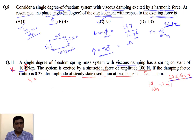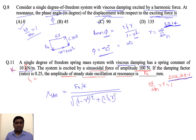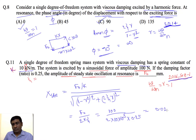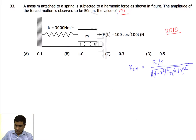Using the steady-state amplitude formula with r = 1, it simplifies to: x_steady = F₀ / (2kξ). Substituting F₀ = 100 N, k = 10 × 10³ N/m, and ξ = 0.25: x_steady = 100 / (2 × 10,000 × 0.25) = 0.02 m = 20 mm. The answer is 20 mm.